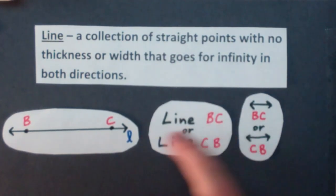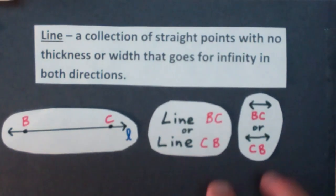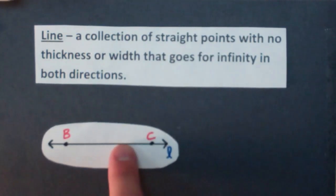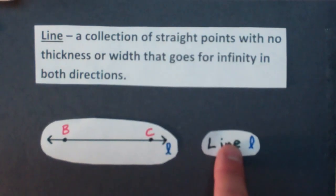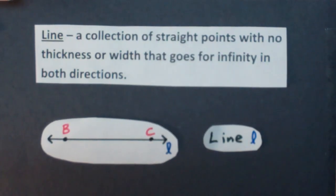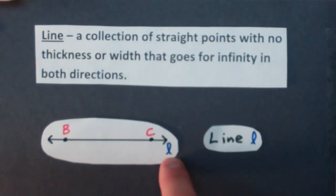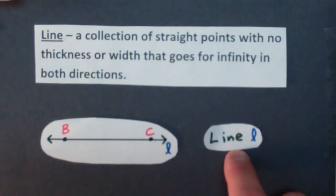So I have line BC or line CB. It doesn't matter. There's also another way, which is not very common, but I still see it from time to time, is you have a lowercase letter next to the line here. So you can also write it down as line lowercase L, because I have a lowercase L here, but it's cursive. You'll generally see it cursive. So this is line lowercase L. This is the way you'd see it written down in a sentence.